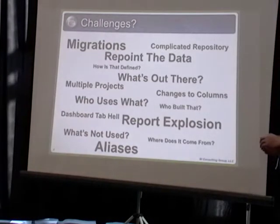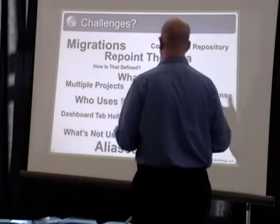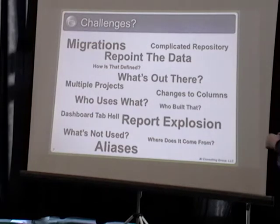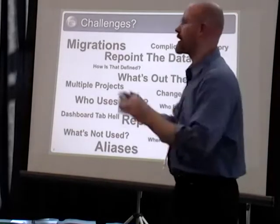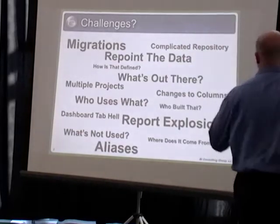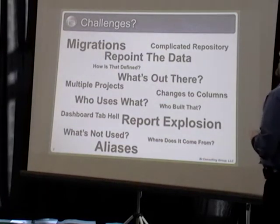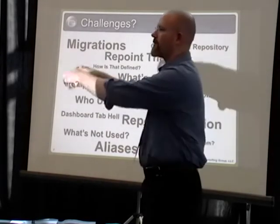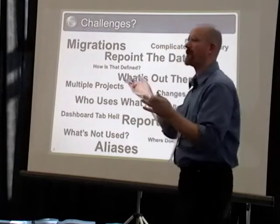Just in the interest of time, here are some challenges that I've thrown up there. This is certainly not an exhaustive list by any stretch. Some of them are a little bit specific to OBIE. Migrations — what do I need to migrate? What are all the things being changed in this particular release that need to be migrated? How does a complicated repository look? Maybe you have to repoint the data — you were originally pointed at this database, now IT is moving the database to a new platform or a whole other instance and you have to repoint it somewhere else.